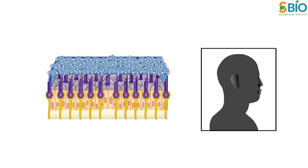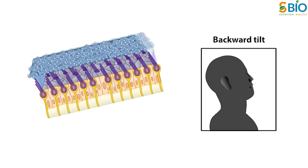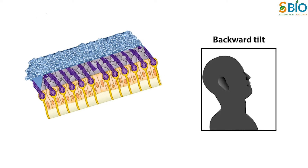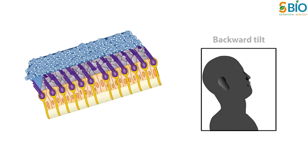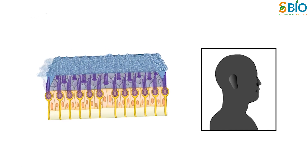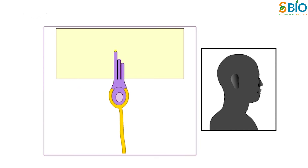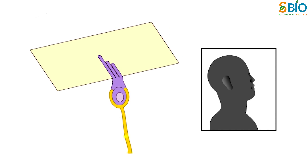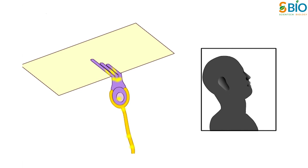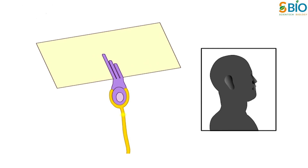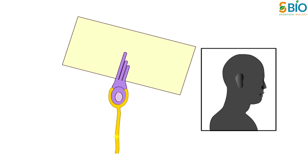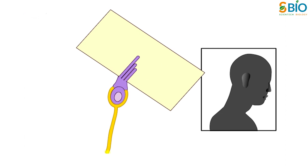Thus, when the head tilts, gravity causes the membrane to shift relative to the sensory epithelium. The resulting shearing motions between the otolithic membrane and the macula displace the hair bundles, which are embedded in the lower gelatinous surface of the membrane. This displacement of the hair bundles generates a receptor potential in the hair cells that is dependent upon the direction of the tilt.